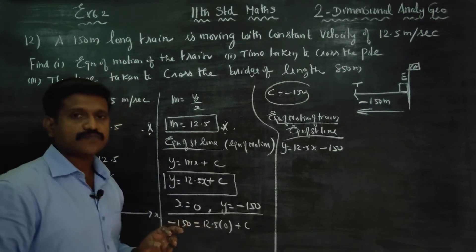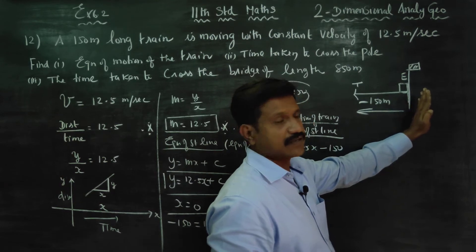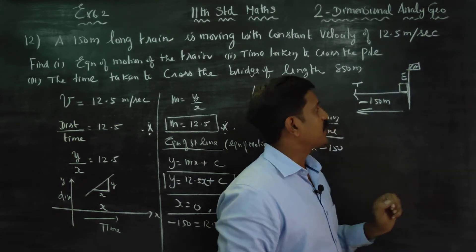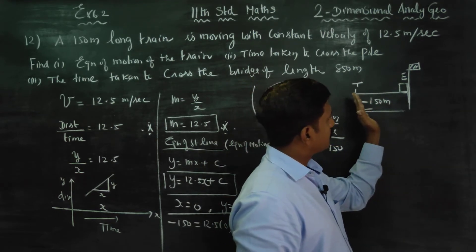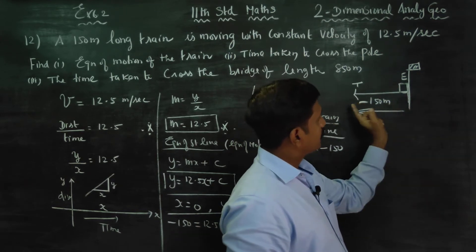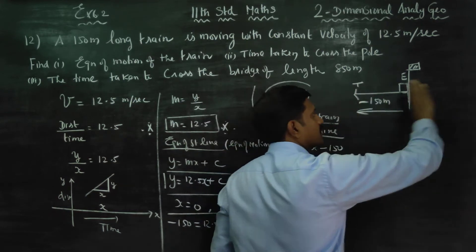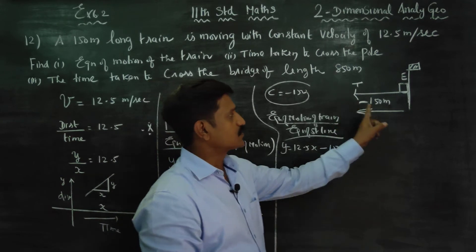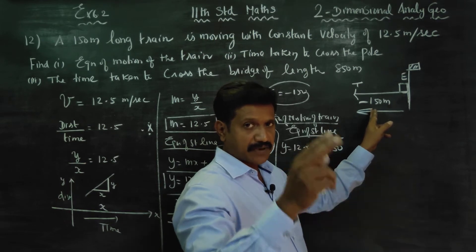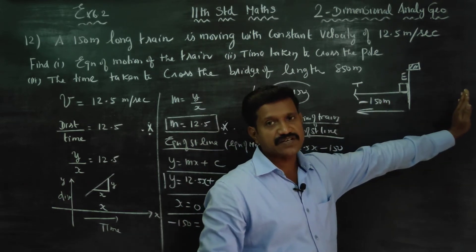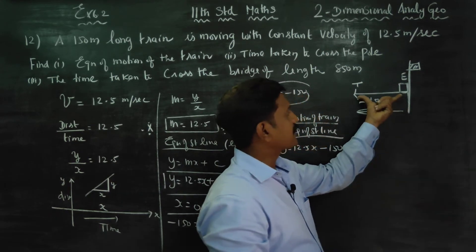Time taken to cross the pole. This is the first starting point. One pole cross - the train is equal to this equation. This is 150 meters. The train will cross the pole, so from minus 150 to minus 140, minus 130, minus 110, down to zero. When the train crosses the post, y is equal to 0.